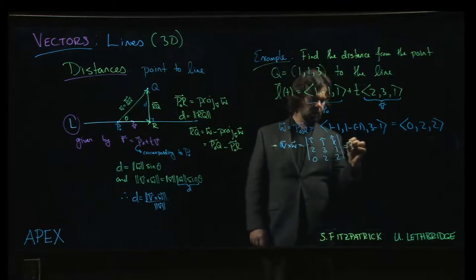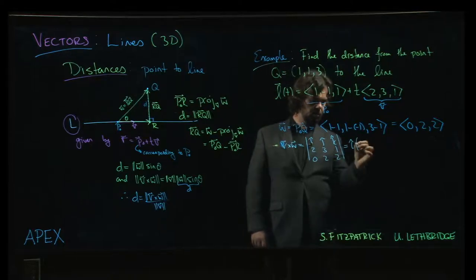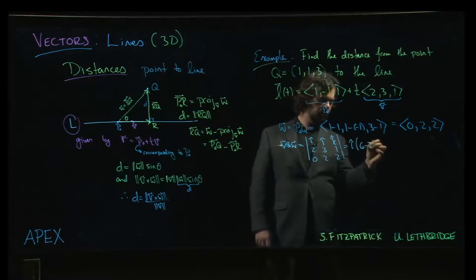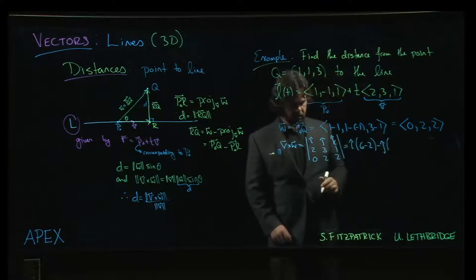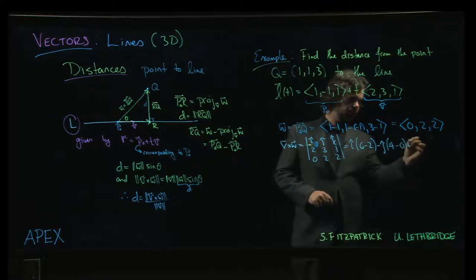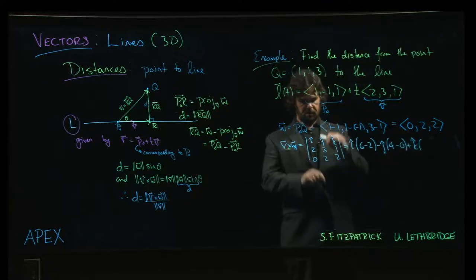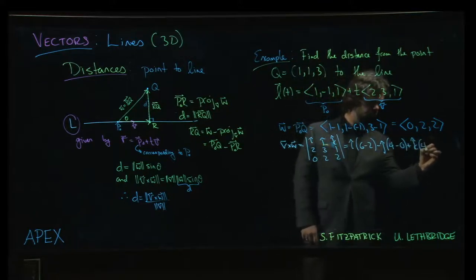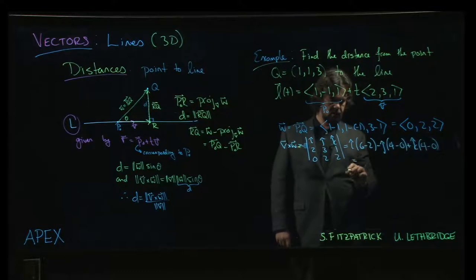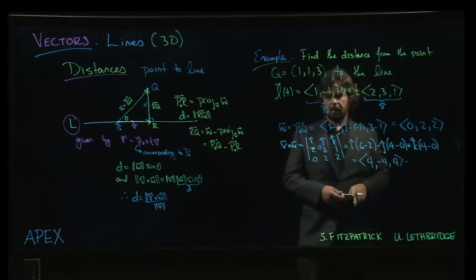So we're going to get i times 6 minus 2, 3 times 2, 2 times 1. So 6 minus 2 minus j times 4 minus 0 plus k times 4 minus 0. So we get the vector 4 minus 4, 4.